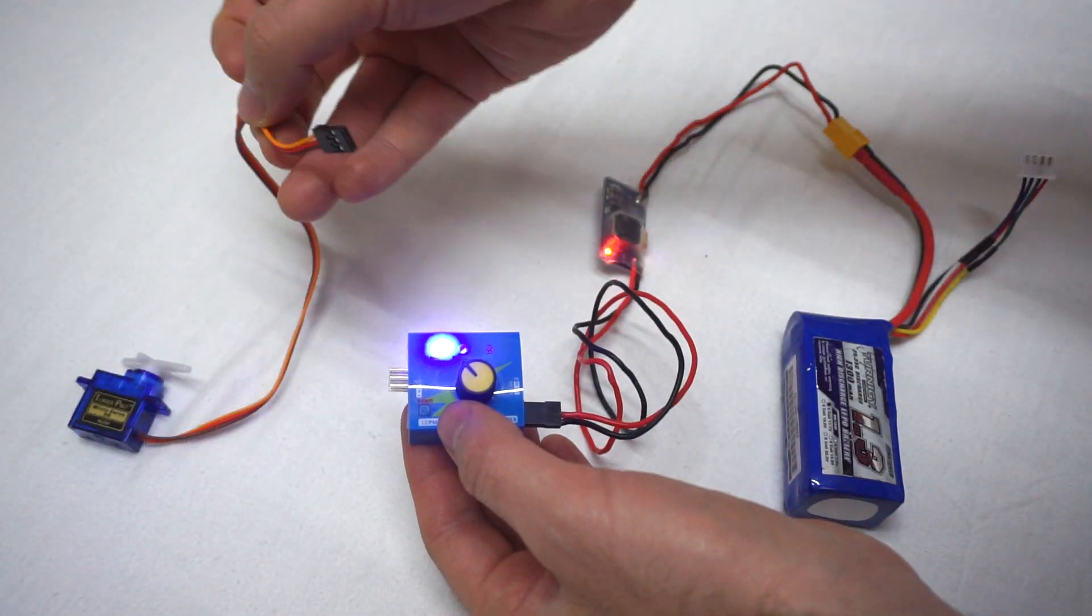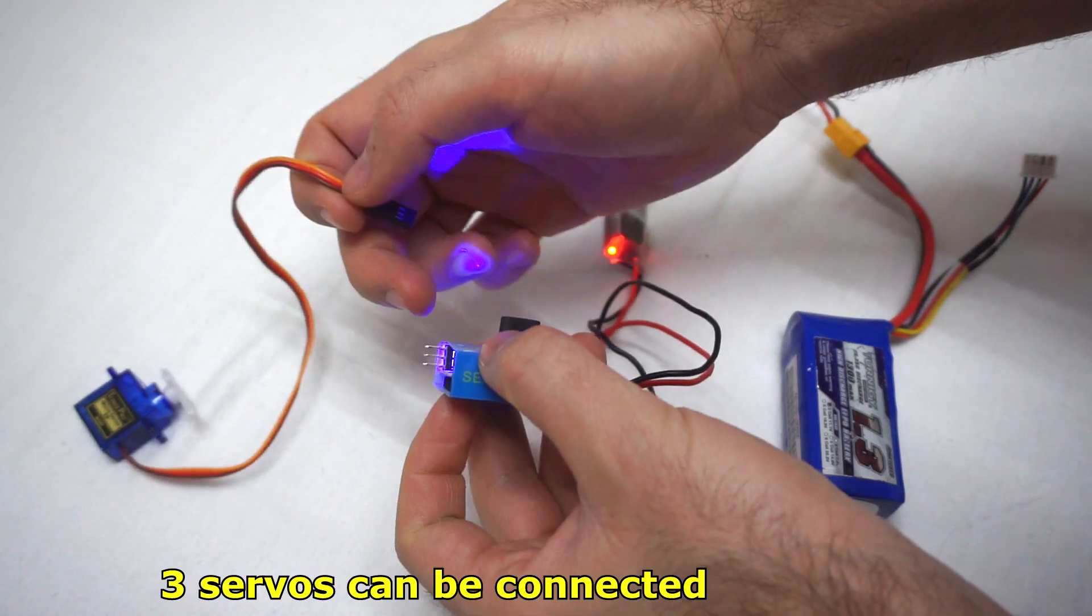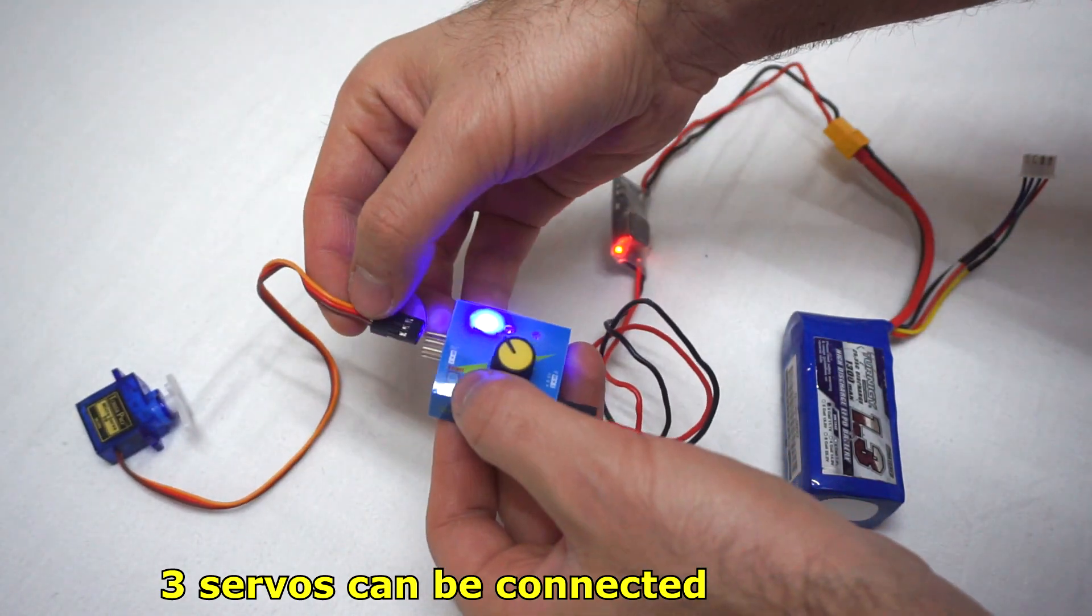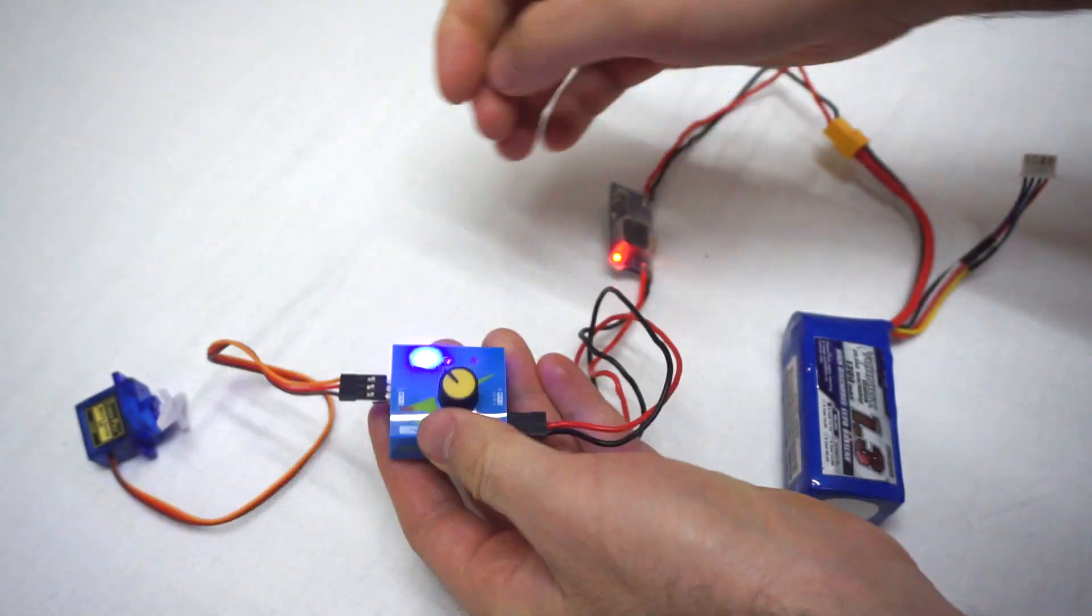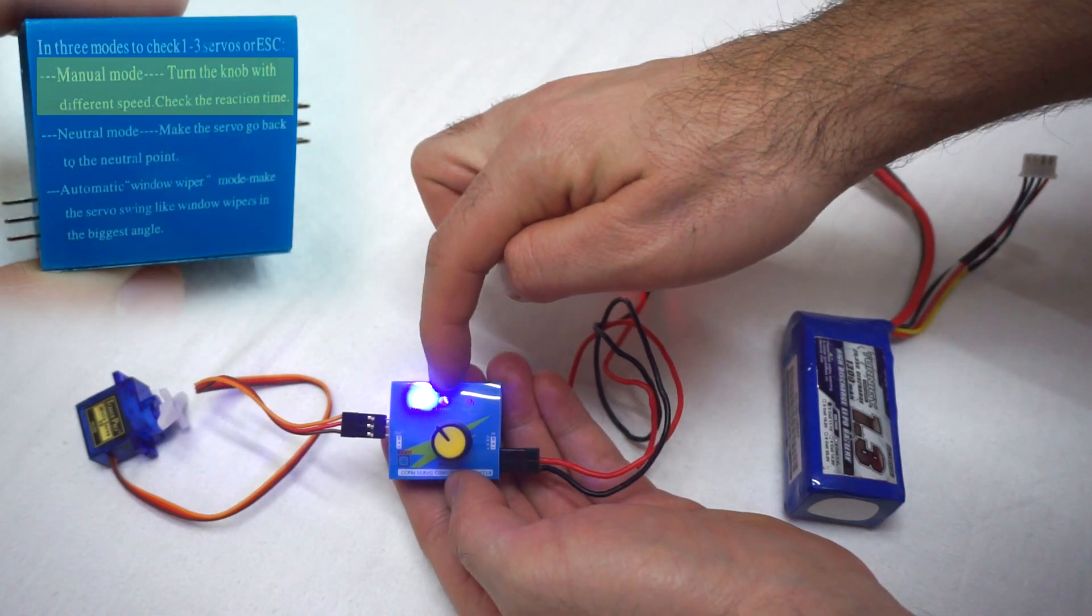The yellow cable is on top. We have three connectors here. We can connect the servo to any of those, so let's try the top one. We have three settings: the first LED, second LED, and third LED. We can switch between them using this button.